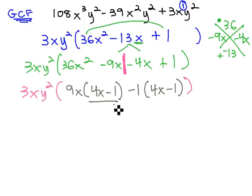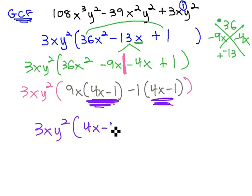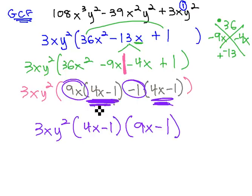Notice we now have this matching binomial of 4x minus 1, with the GCF out front, 3xy², times the 4x minus 1, and then the remaining 9x minus 1. And now our expression is completely factored.